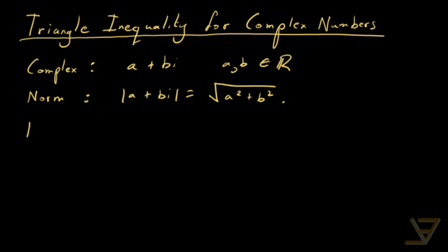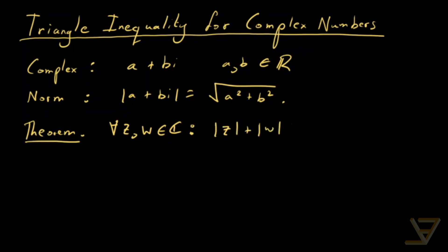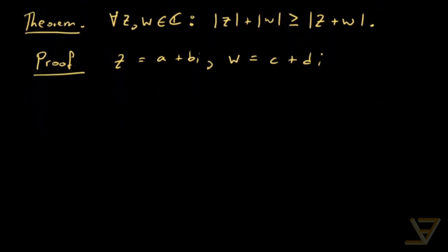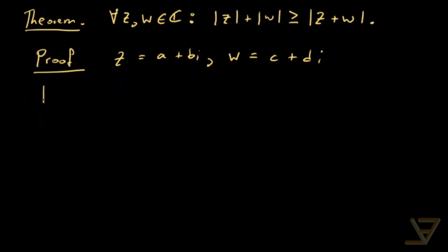The theorem we want to prove — the triangle inequality for complex numbers — says that for all z and w in the complex numbers, it holds that |z| + |w| ≥ |z + w|. We're going to use the substitution z = a + bi and w = c + di to prove it. So what we're trying to prove is that |a + bi| + |c + di| ≥ |a + c + (b + d)i|.